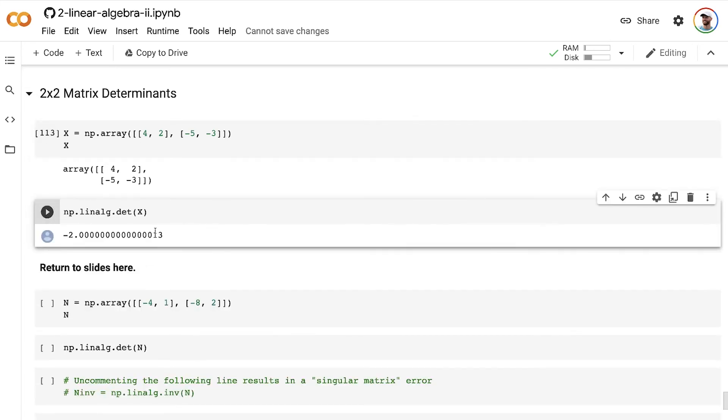And that gives us, notwithstanding some rounding error, which we can safely ignore, this comes out to a negative 2, which is the same as we calculated on the slides.